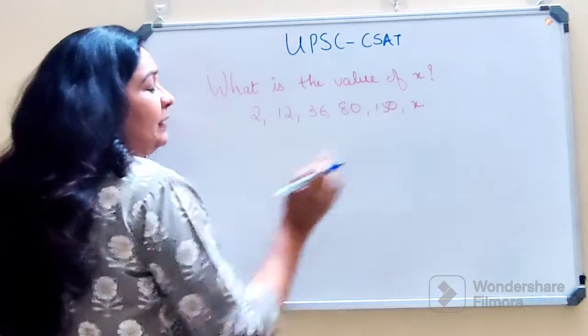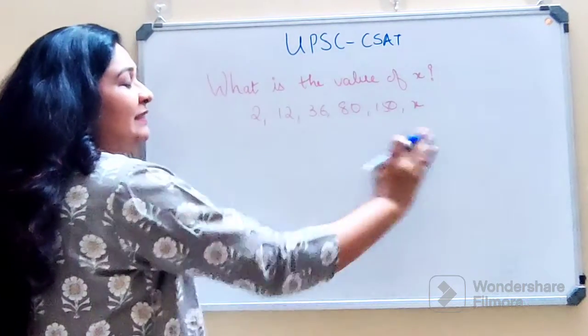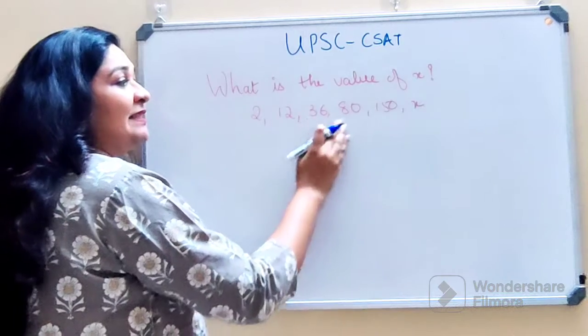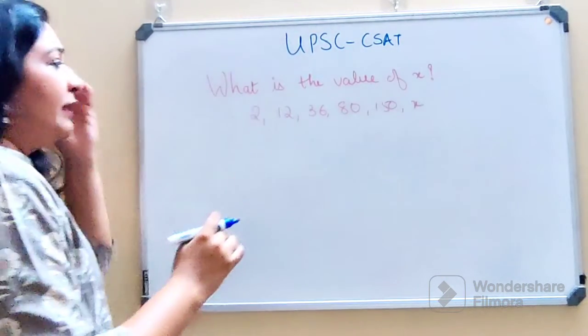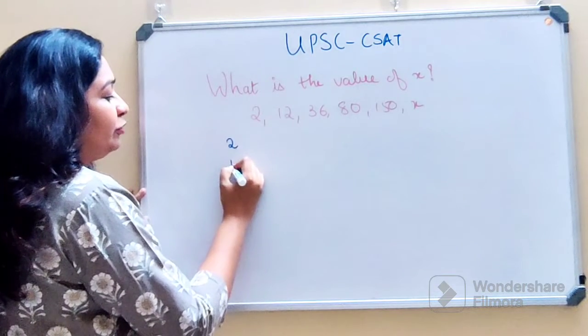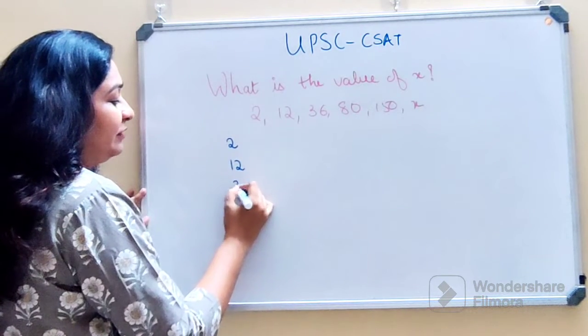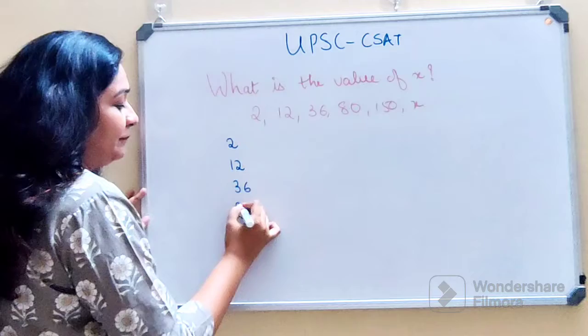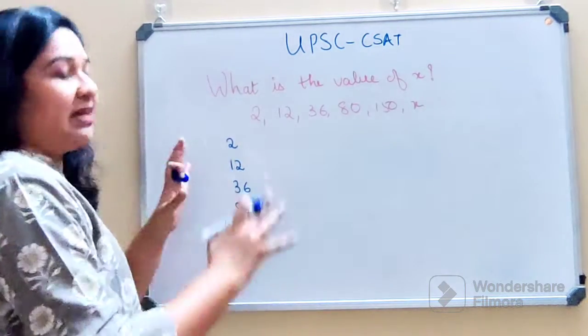We have to find the value of x and the series given is 2, 12, 36, 80, 150, and x. So now understand we have 2 and then we have 12, then we have 36 and then we have 80. As of now let's try and understand.